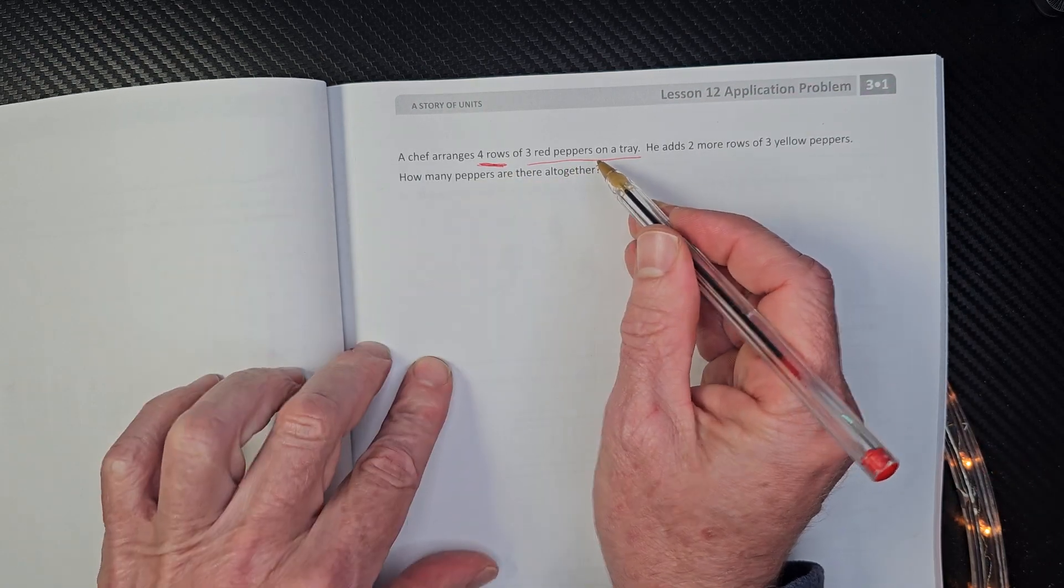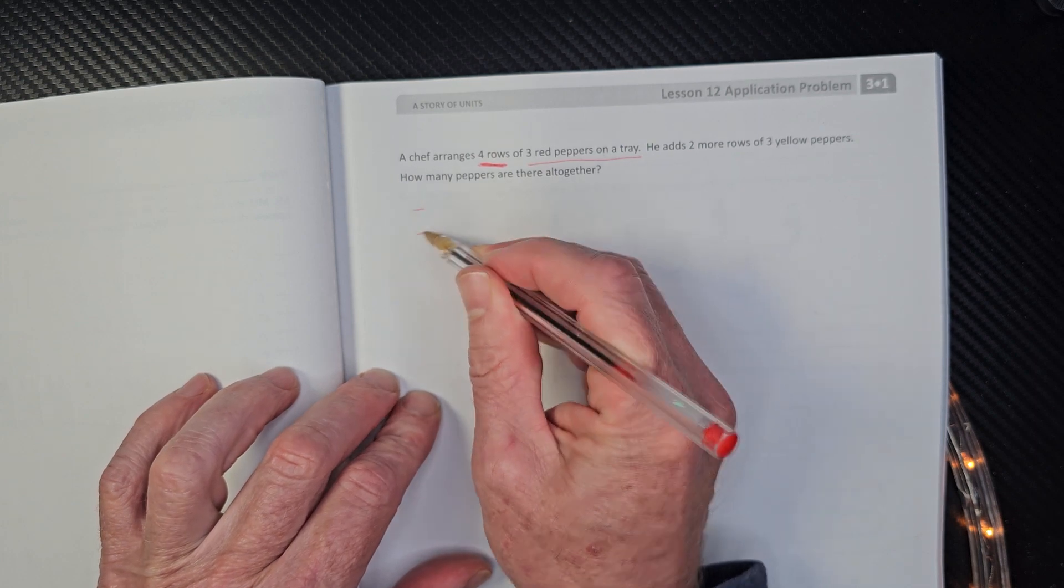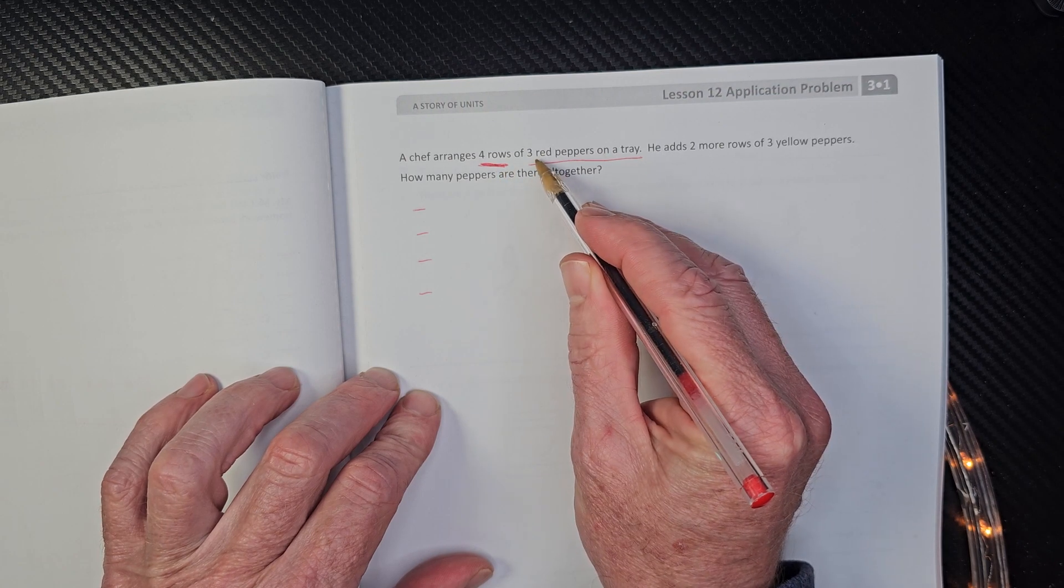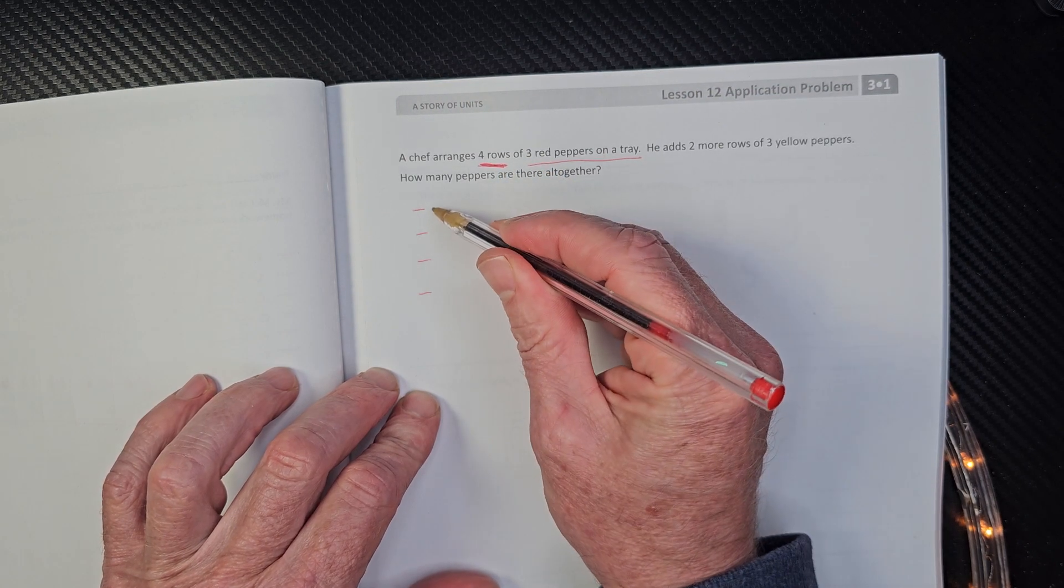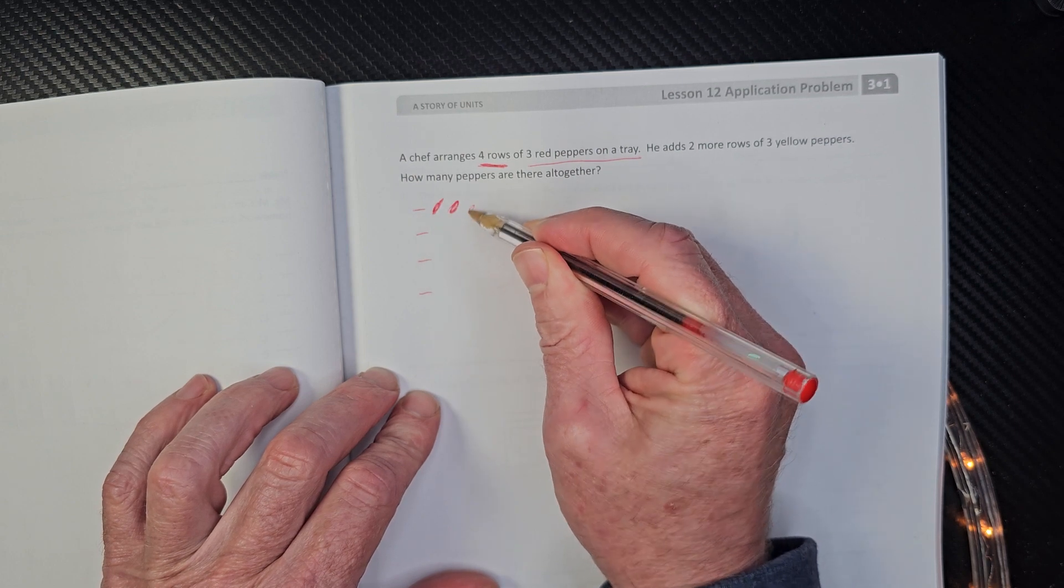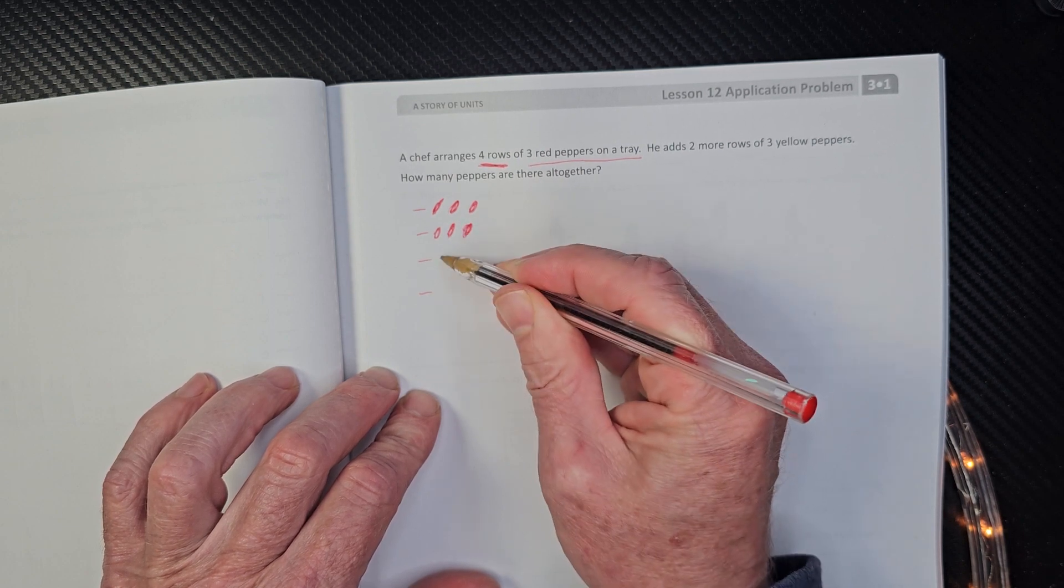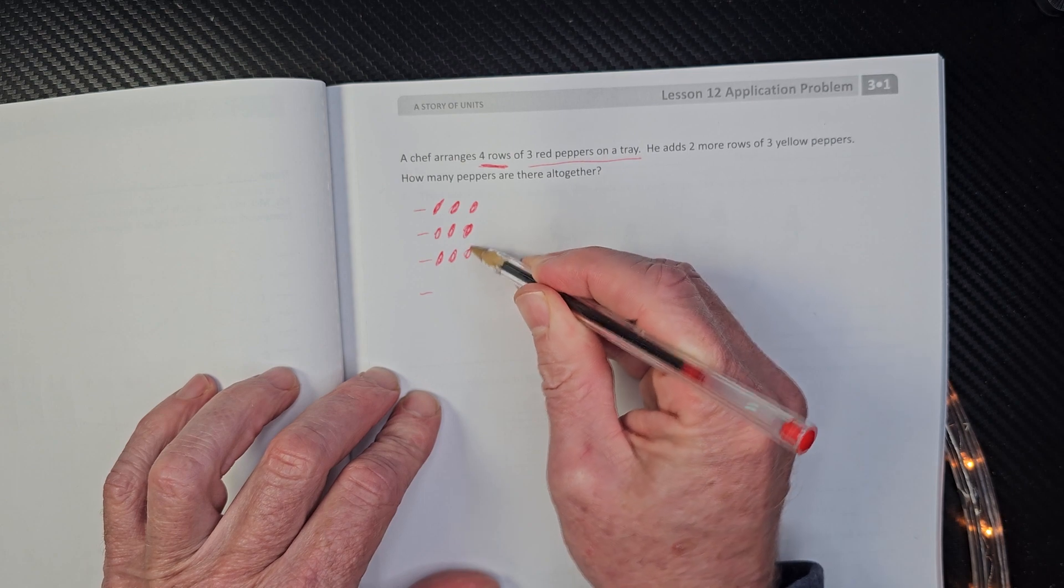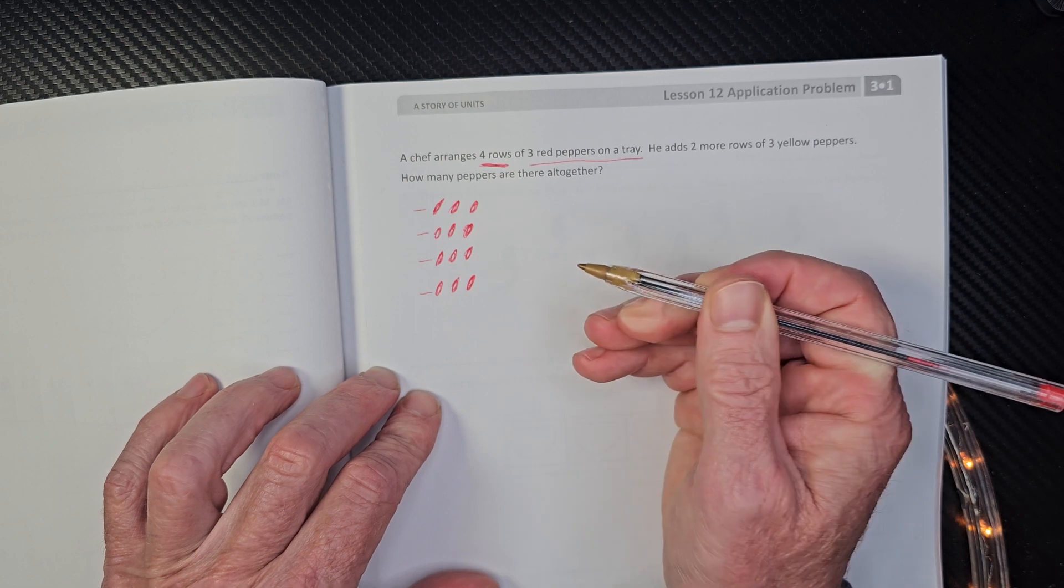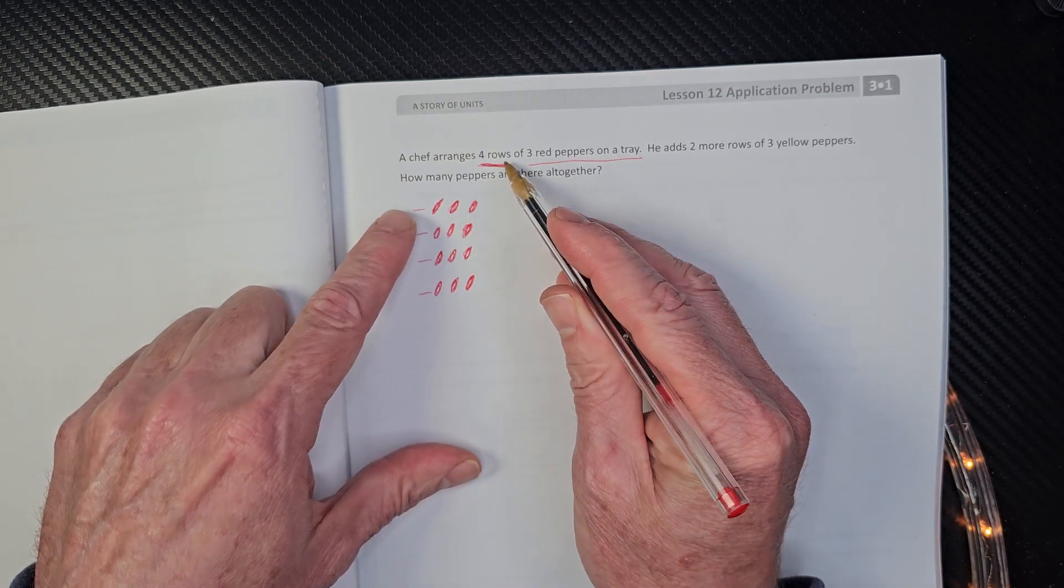So he has four rows of three red peppers. When I make four rows, what I like to do is I put a line. So I go one, two, three, four. There's my four rows. And in each row, there's going to be three red peppers. So I'm just going to make some peppers. It kind of looks like a pepper. Pepper, pepper, pepper. So we have three red peppers, four rows of them.